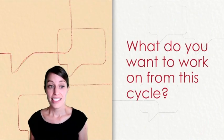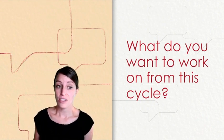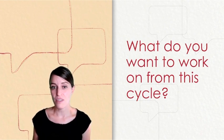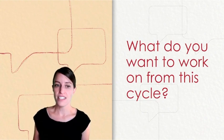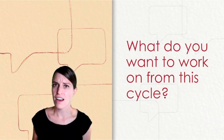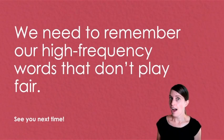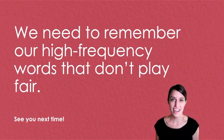Wow. Today, we reviewed the skills that we've been working on throughout this cycle. That includes matching letters and sounds, blending and separating sounds to read and write, and learning new words. We even did a little self-assessment to see what we need to keep working on. What do you want to work on from this cycle as we continue our work together? I know that I want to keep working on holding those high-frequency words in my head. I'm going to keep practicing that when we continue our work in the next cycle.